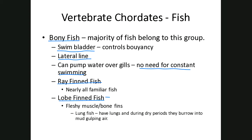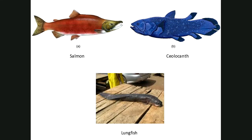One member of the lobed-finned fish are the lung fish, named because they actually have lungs. So they have gills because they swim in the water, but they also have lungs so that when they're in a creek bed that dries out, they can actually burrow down into the mud and gulp air with their lungs for a period of time. On the left we see a salmon with the thin ray fins you recognize in most fish, and the coelacanth is one of the lobed-finned fishes with fleshier, thicker fins. Down here is the lung fish that can actually gulp air.